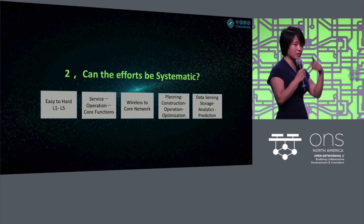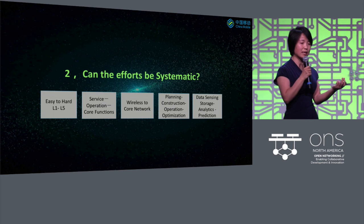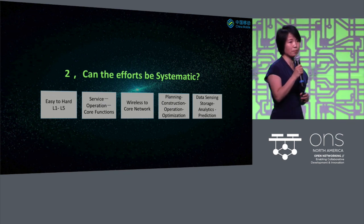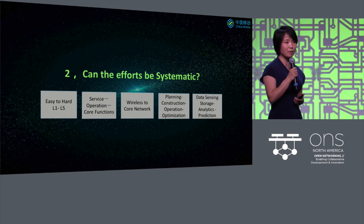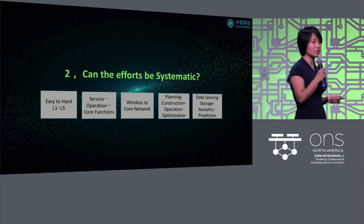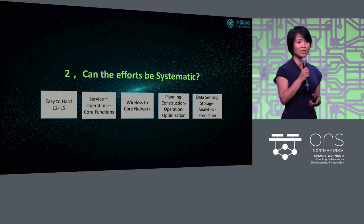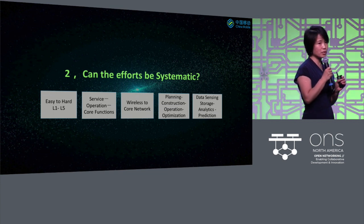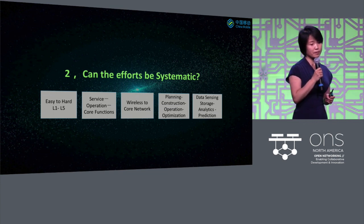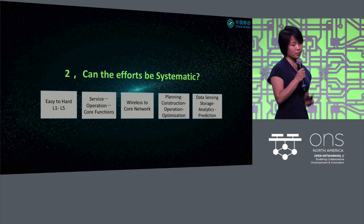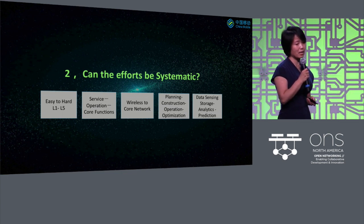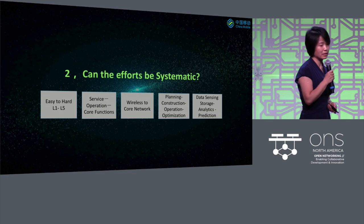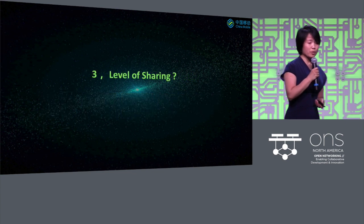When we do AI, we need to sense the data correctly — how to do the sensing right. We are proud we get lots of data, but lots of data means big cost, not necessarily big value. How can we in a cost-effective way sense our network quality and user experience, and then correctly store, analyze, and predict from that data? Those are open questions.